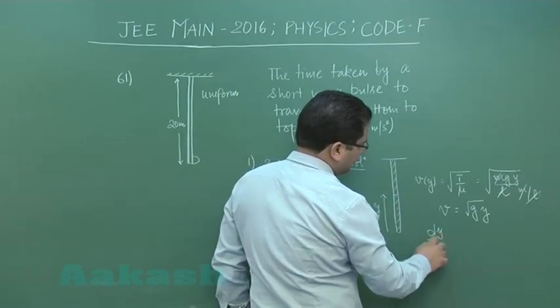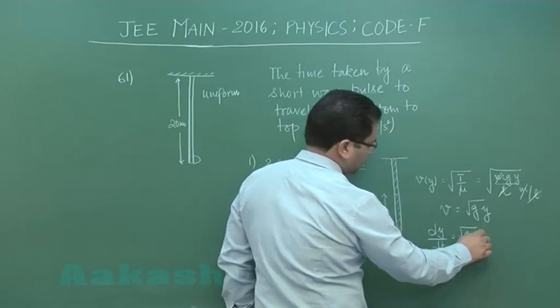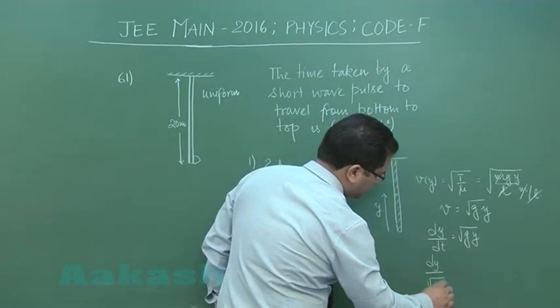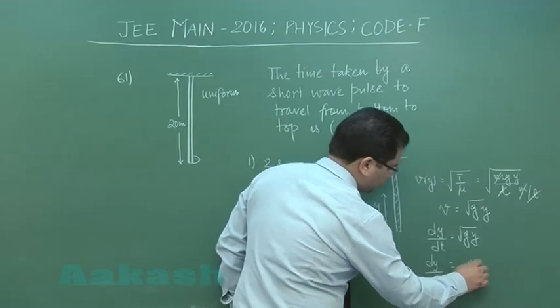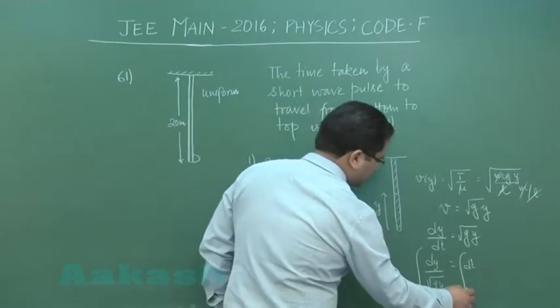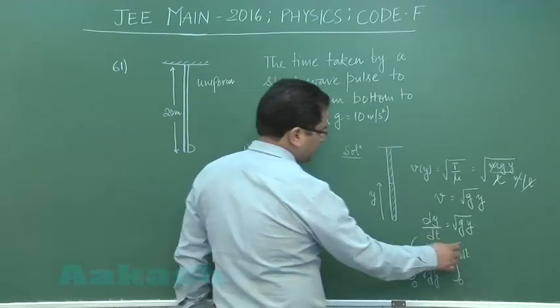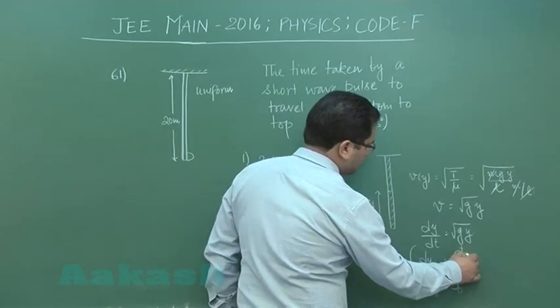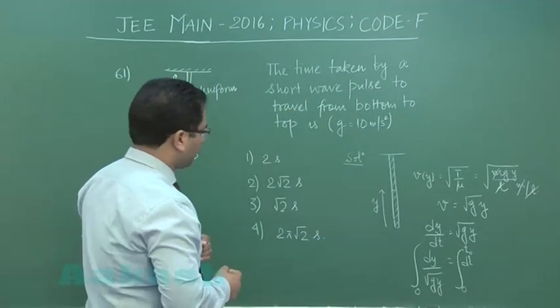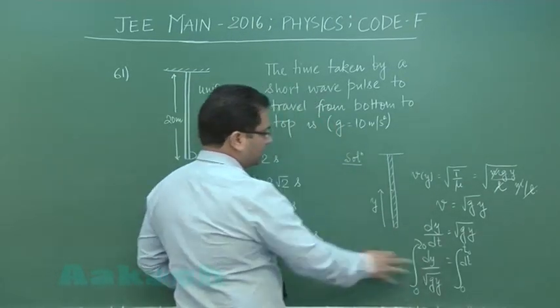dy by dt will be equals to root of gy, and dy by root gy comes out to be equals to dt. Now let us put the limit: at t equals to 0, y is 0, and at t equals to t naught, the time that the wave pulse takes to reach the top, the value of y of course would be equals to 20.